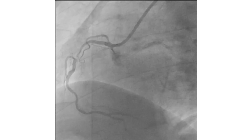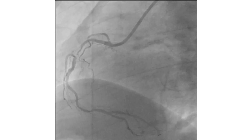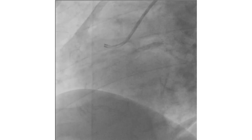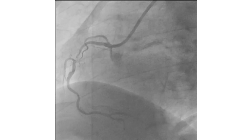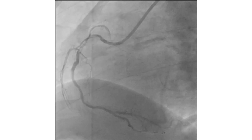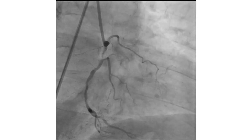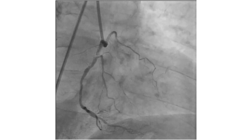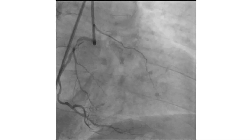This is the LAO view of the RCA, showing a mid-critical lesion — actually a subtotal with heavy calcification. Distally, the vessel looks calcified with atherosclerosis. This is the REO view of the same lesion. We can also see the heavy calcification in the LAD and left circumflex.